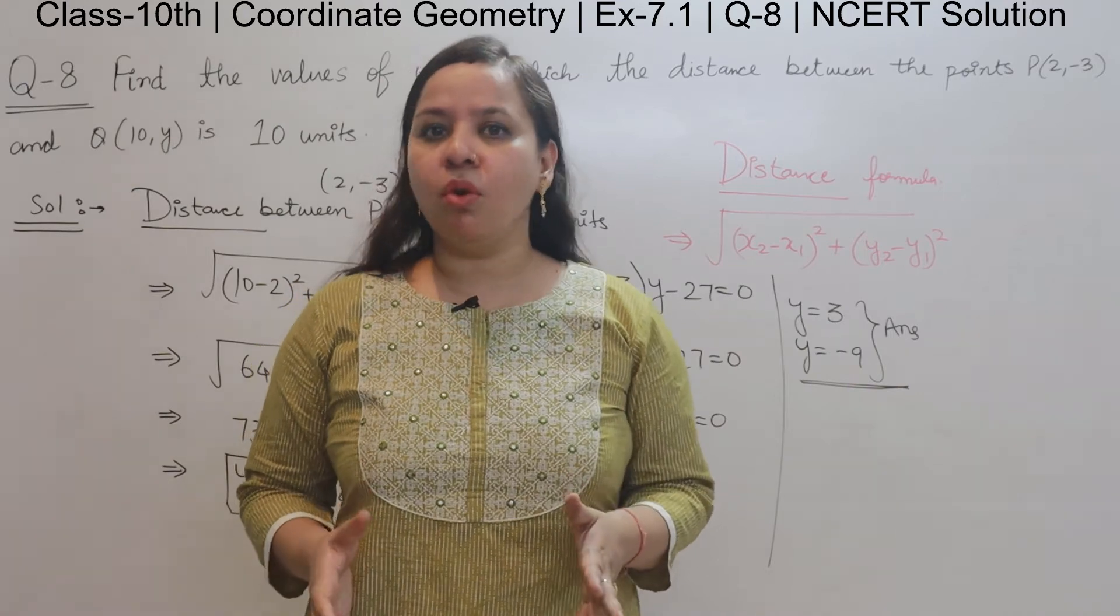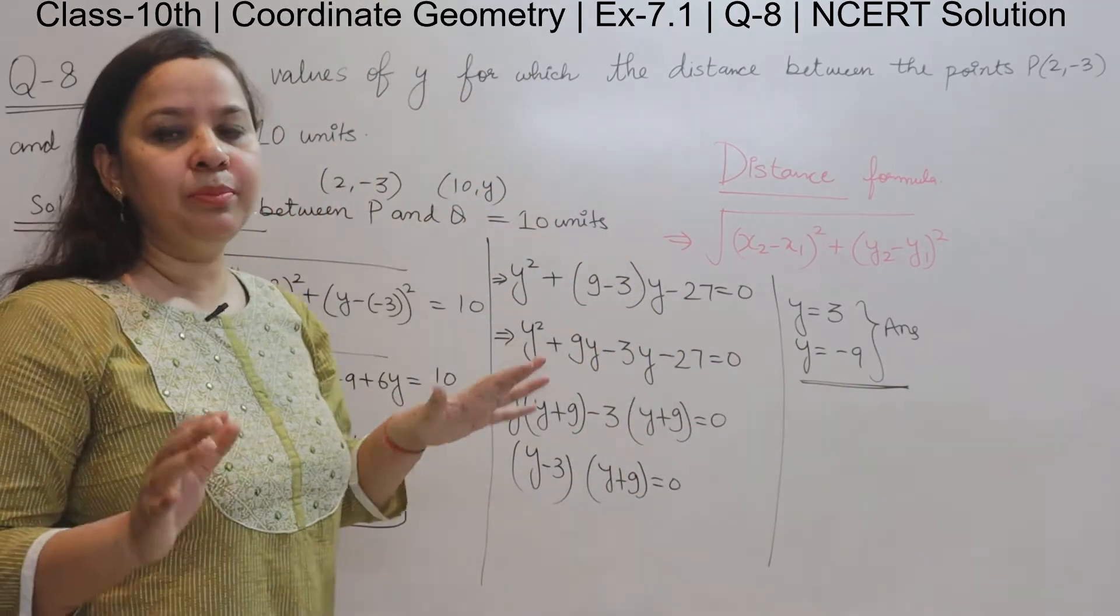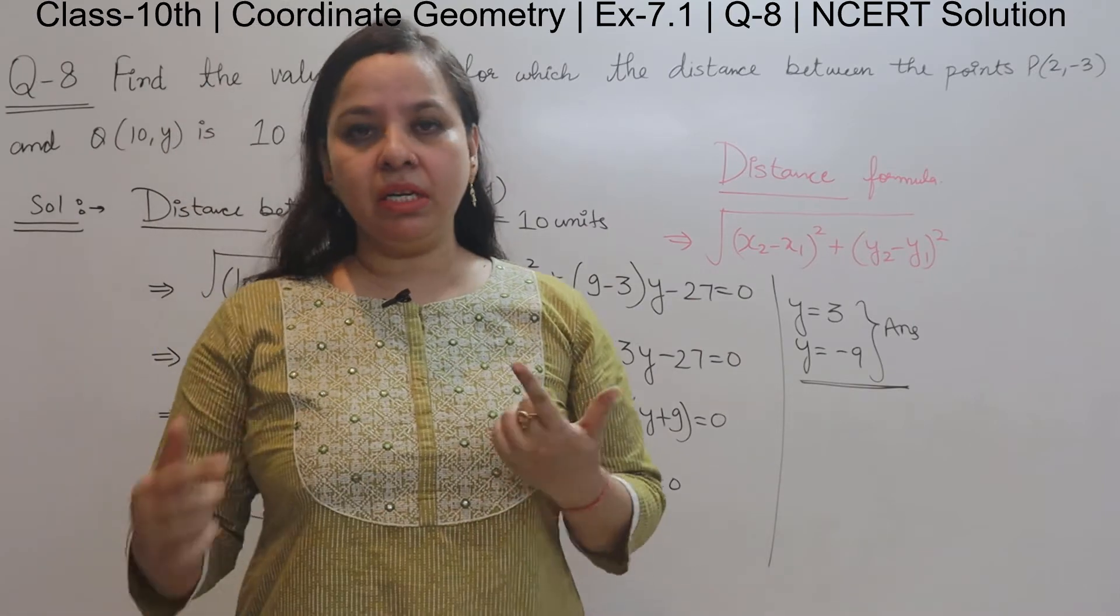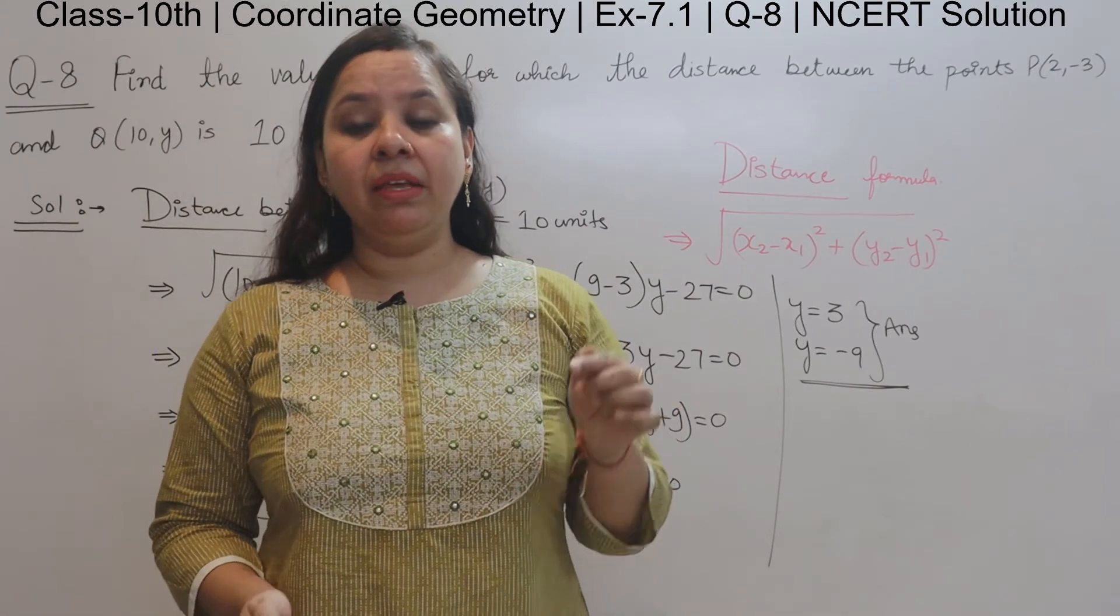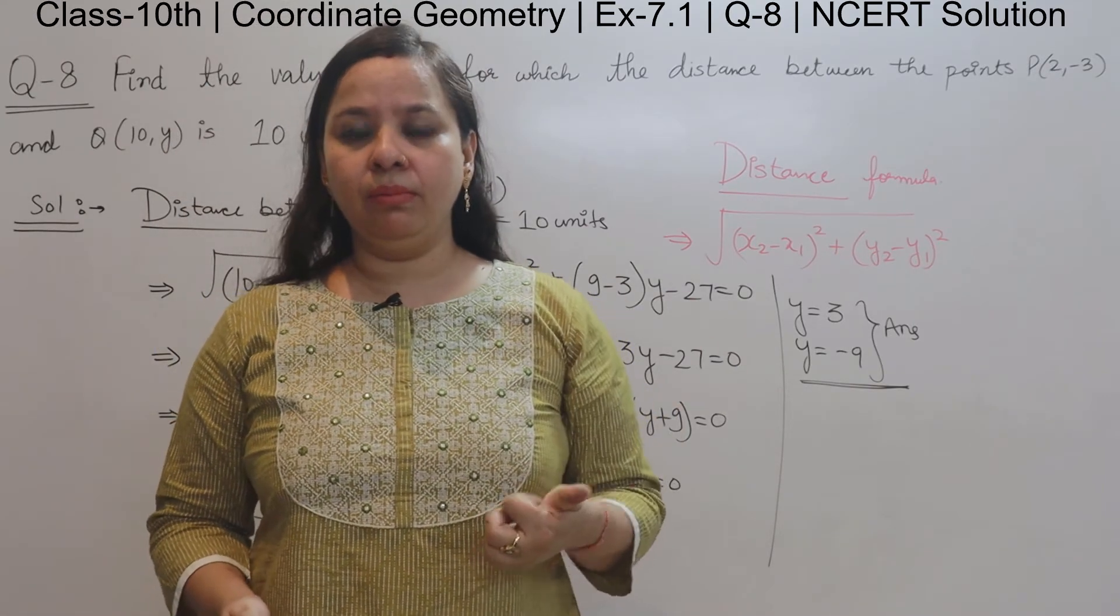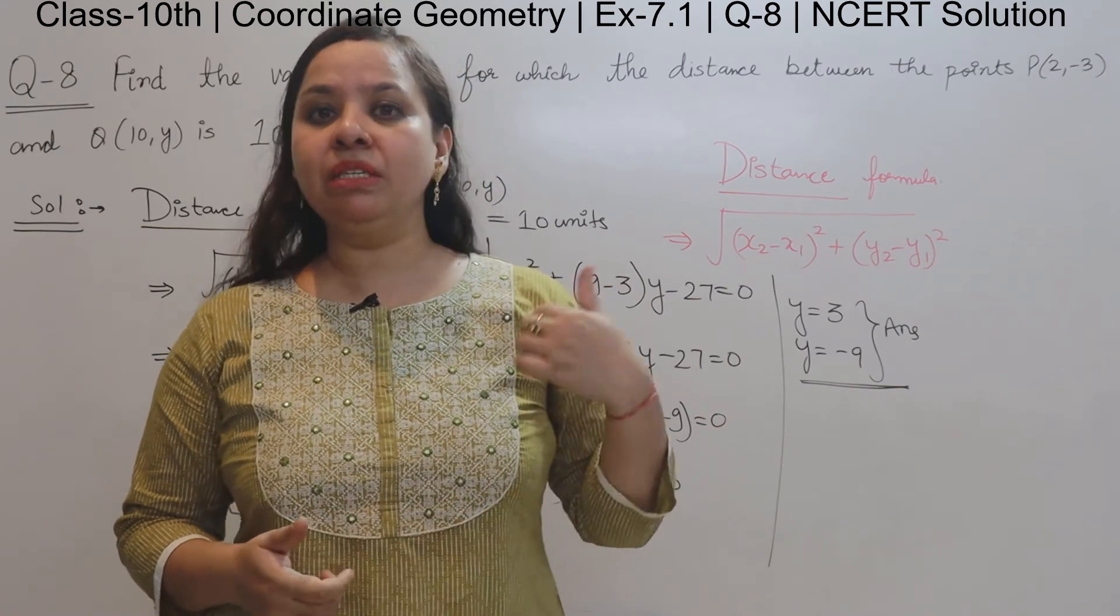In this question we have two points P and Q and we have the distance already given. There is a variable in the points and we have to find the value of this variable, which is y.